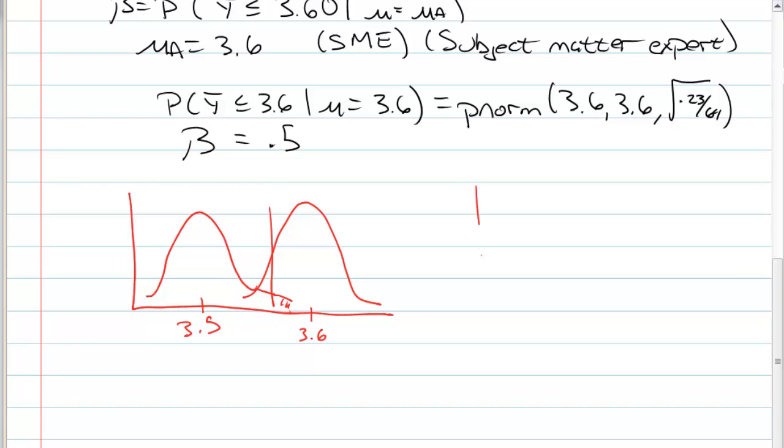What we would like to do is calculate a sample size that's narrower so that you have more of a chance of detecting that or less chance of making a type 2 error.